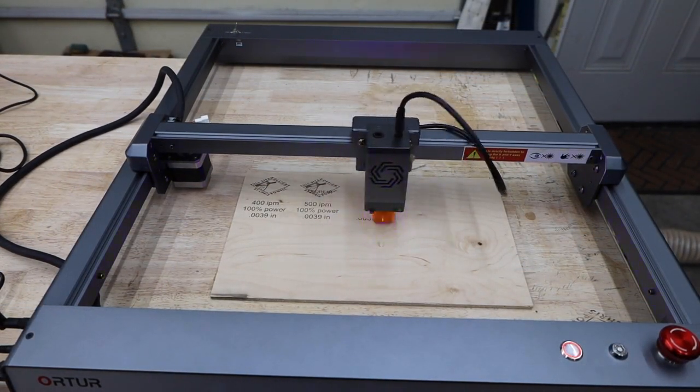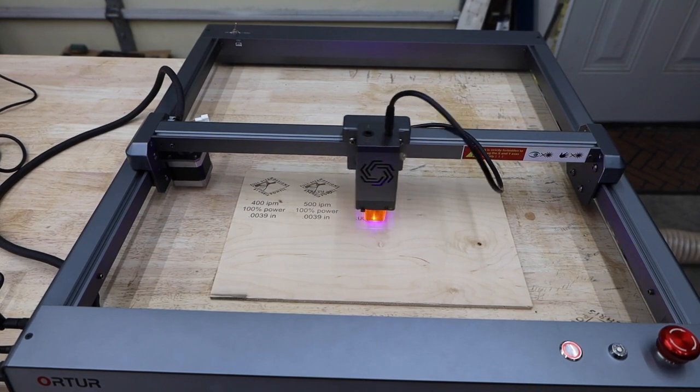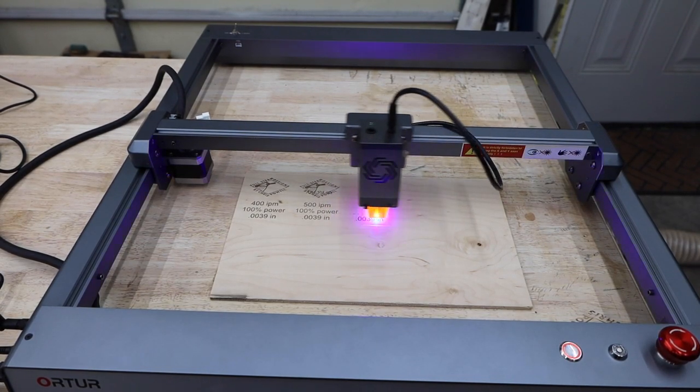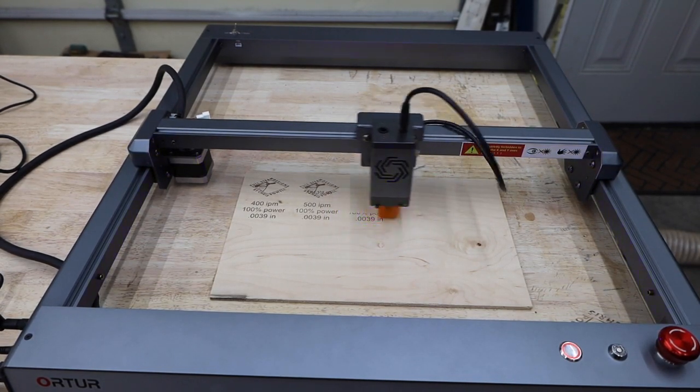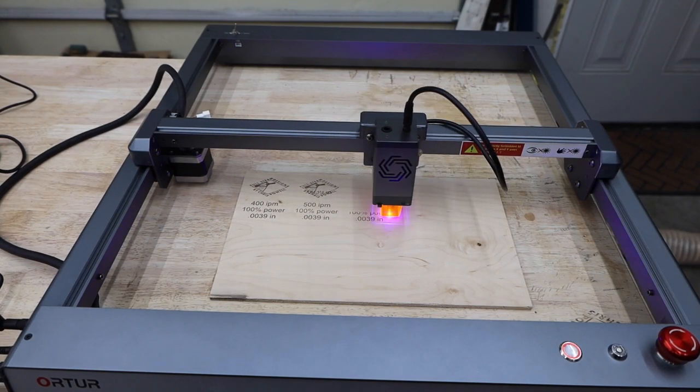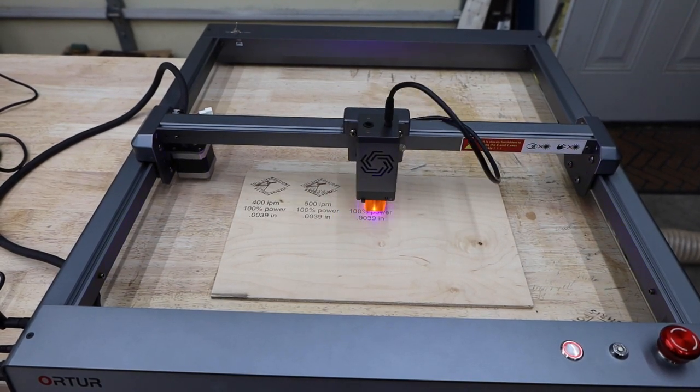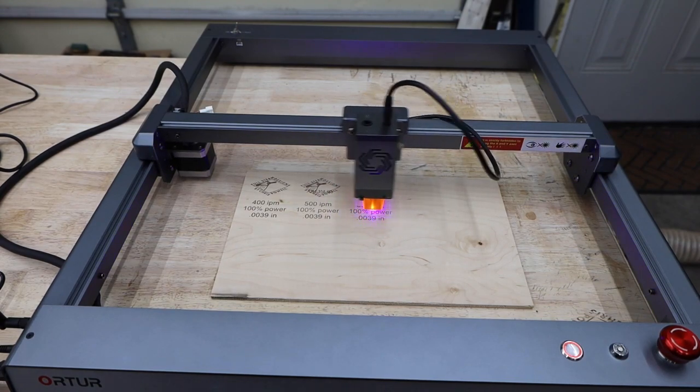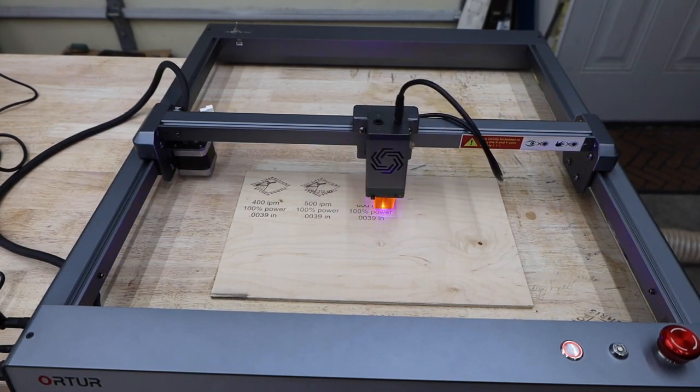The most basic thing you need to know is that you can make your image lighter by speeding up the movement of the laser or turning down the power. To make something darker, slow down the speed or increase the power. You can see here the effects of different speeds.